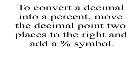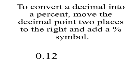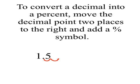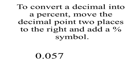To convert a decimal into a percent, move the decimal point two places to the right and add a percent symbol. So here's .12 — we move it two to the right, and we get 12%. Here's .3 — we move it two to the right, we have to add a zero to fill in the place, and we get 30%. 1.5 — move it two, add a zero, and we get 150%. And .057 — move it two, and we get 5.7%.